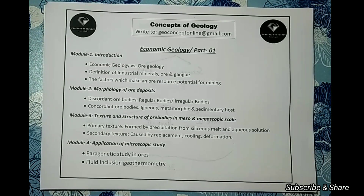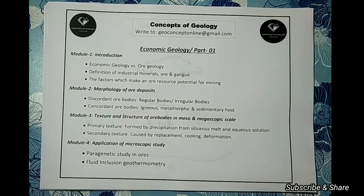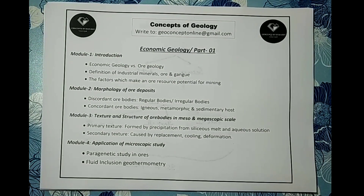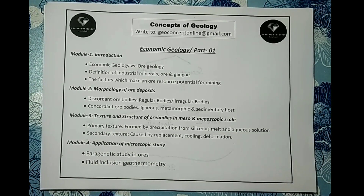Next in module 1 is the definition of industrial minerals, ore, and gangue. An ore is a mineral from which we extract metals in a profit-making way. We will also define industrial minerals, gangue, and by-products. The third bullet covers the factors which make an ore resource potential for mining — not all economic concentrations inside the earth are suitable for mining. That will be the end of module 1, the introduction.